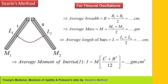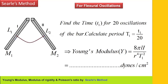Average moment of inertia I is equal to M times (A² + B²) divided by 12, in gram·centimeter². Find the time for 20 oscillations of the bar and calculate the time period T1, which equals the total time t taken for 20 oscillations divided by 20.